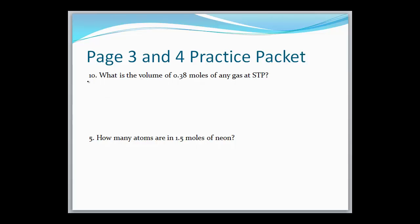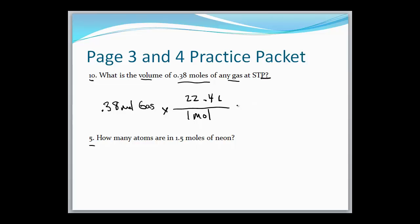Let's look at number 10: 0.38 moles of any gas — what is the volume? You might think we need to know what the gas is, but the answer is no. Our conversion is that one mole of any gas at STP is 22.4 liters. Moles cancel, and 0.38 times 22.4 is 8.5 liters of that gas. All we're doing with dimensional analysis is canceling units until we get the unit we're looking for, and this technique will go a long way toward your success throughout the rest of the course.